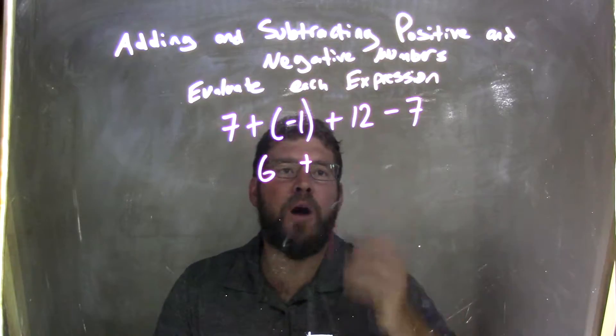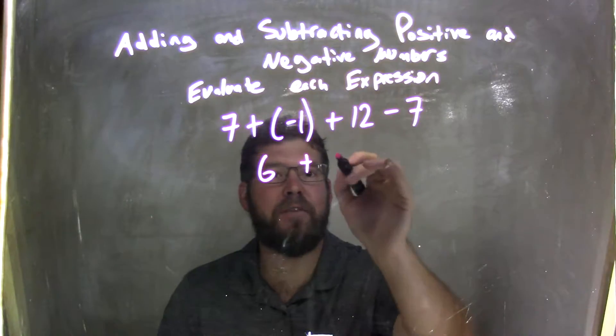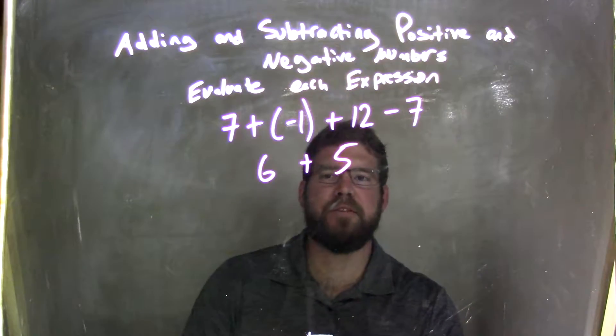Plus, and while we're at it, can we do the 12 minus 7? Well, 12 minus 7 comes out to be 5. Okay, so 12 minus 7 is 5.